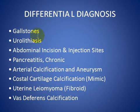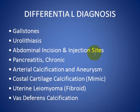The differential diagnosis of abdominal calcification includes: gallstones, urinary tract stones, abdominal incision or injection sites, pancreatitis — especially chronic pancreatitis — arterial calcification, and aneurysm costal cartilage.